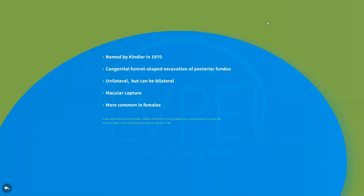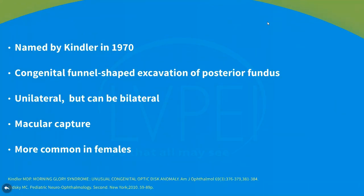Morning glory disc was so named by Kindler because of its resemblance to the morning glory flower. It is a congenital funnel-shaped excavation of the posterior fundus that incorporates the optic disc. It is mostly unilateral but can be bilateral, and the macula may be incorporated into the excavation.